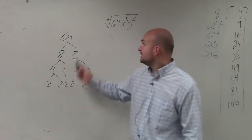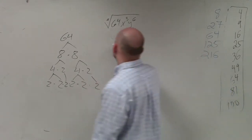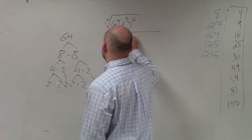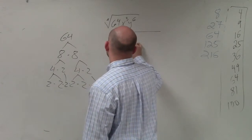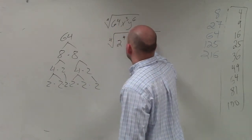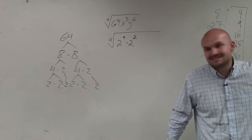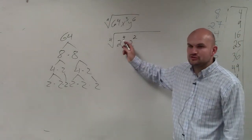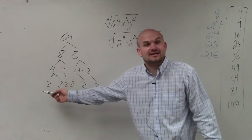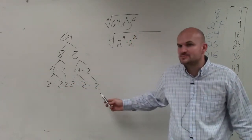Or really, 2 to the fourth power times 2 squared. Instead of writing them all out, I'm going to write it as 2 to the fourth times 2 squared, which is the same thing — it's the same thing as 2 to the sixth power.